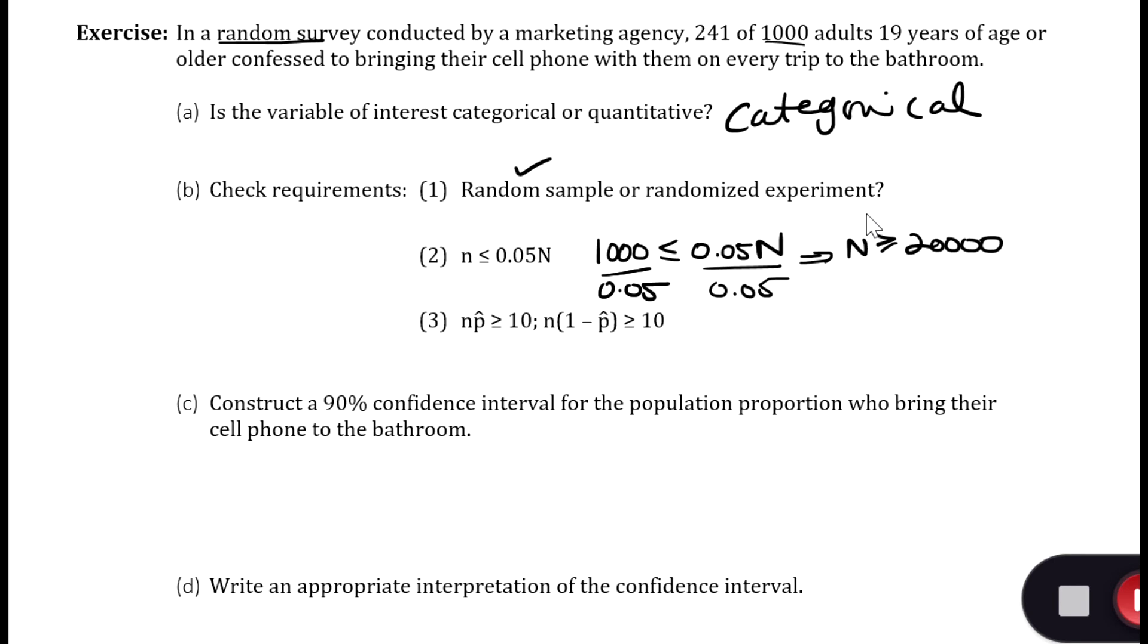My sample is 1000 adults 19 years of age or older, so my population would be all adults 19 years of age or older, of which there are more than 20,000 of those. So this is being satisfied.